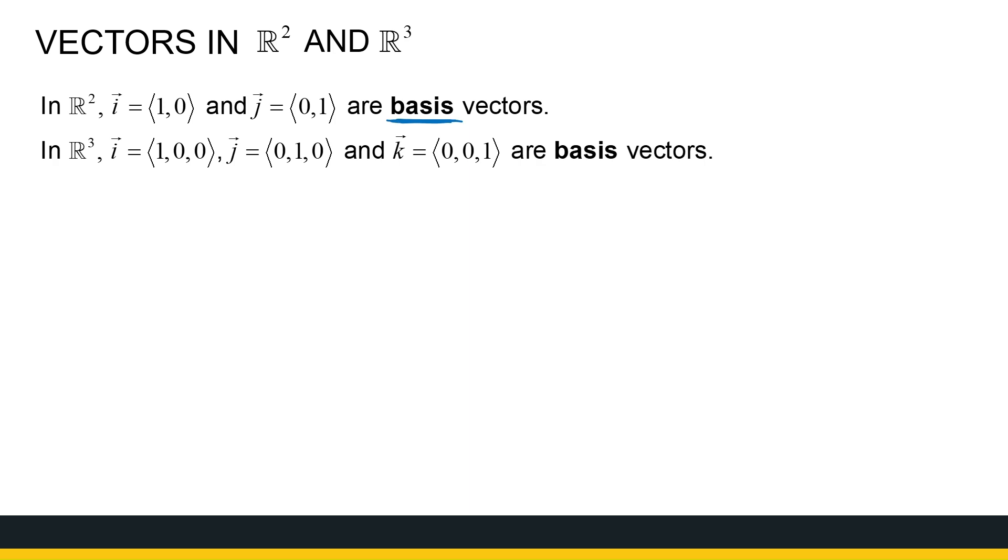Now, if you look at the section of real vector spaces, there we go into more detail of what a basis is. So now we're going to have a bit more of an intuitive understanding of what a basis vector is. In R2, there's two basis vectors, i and j.